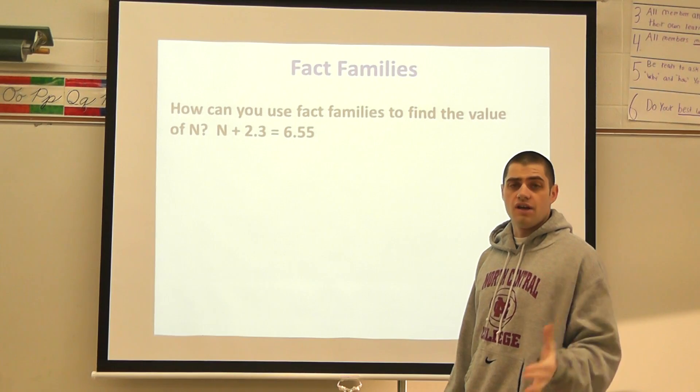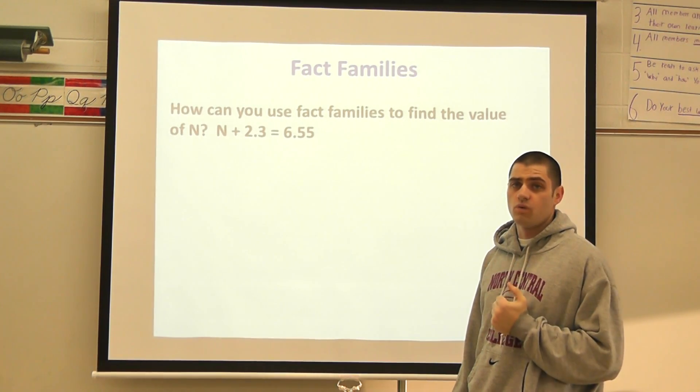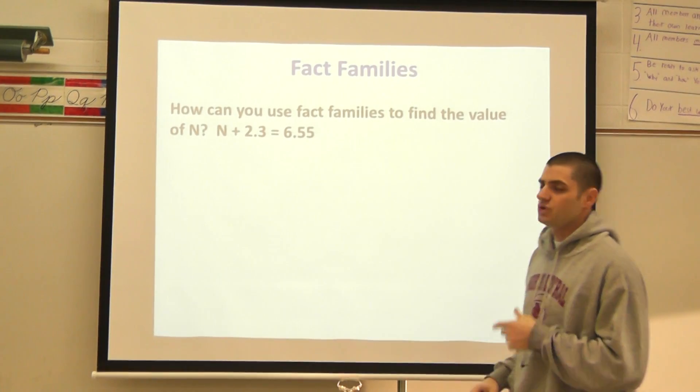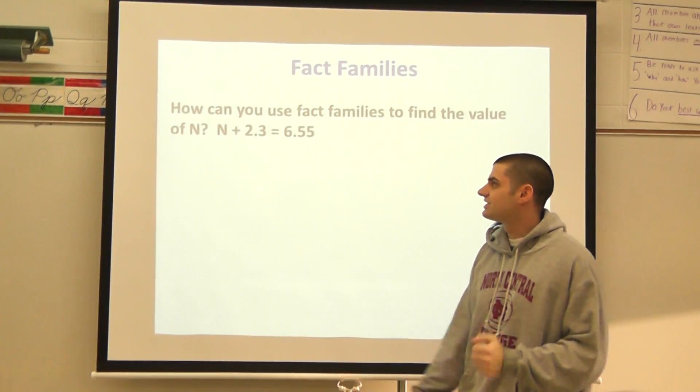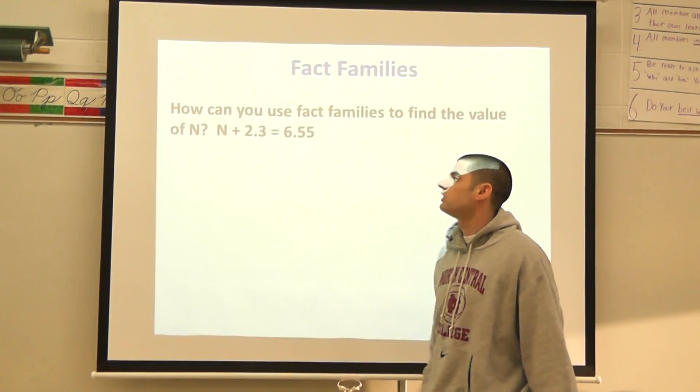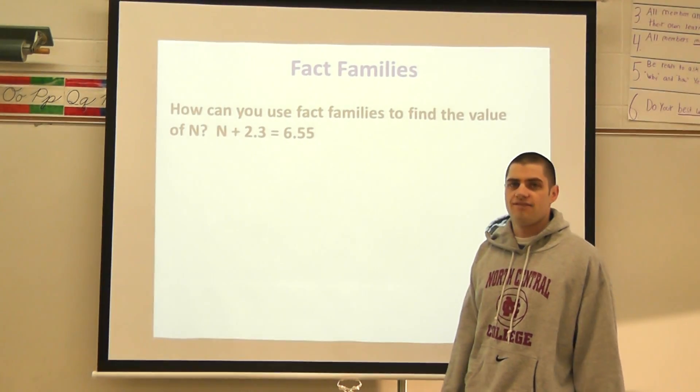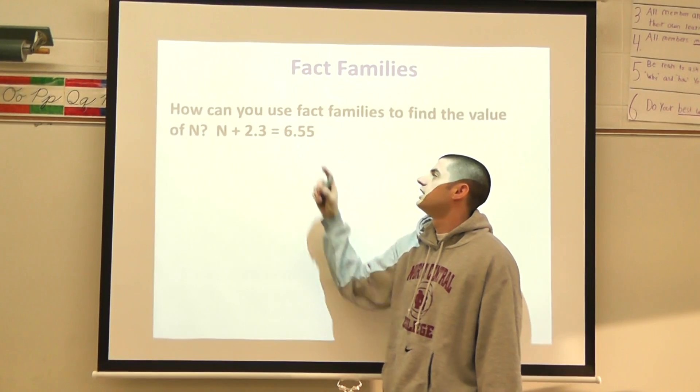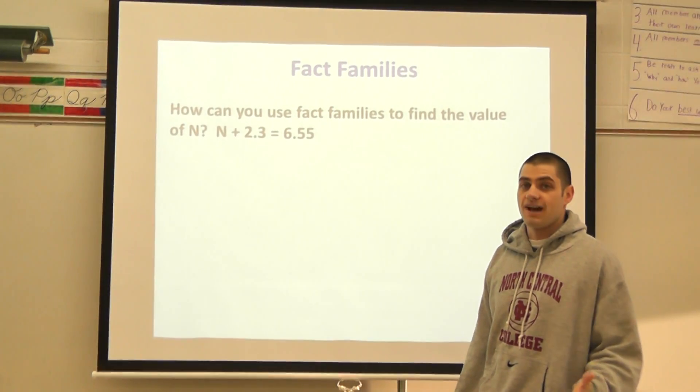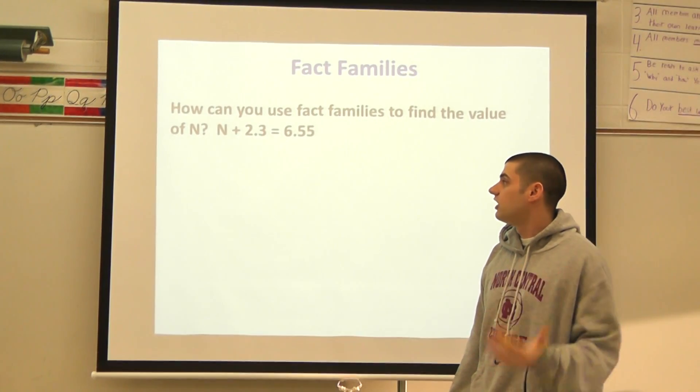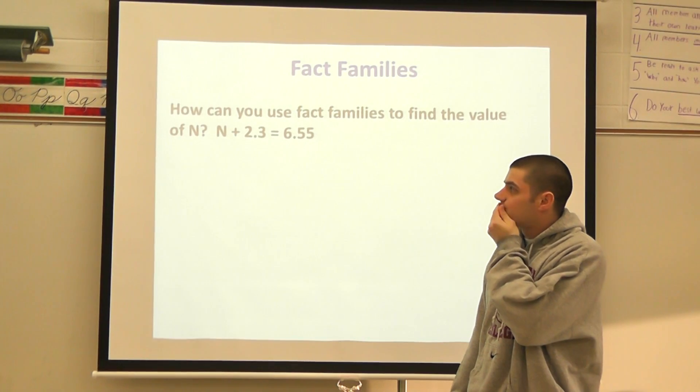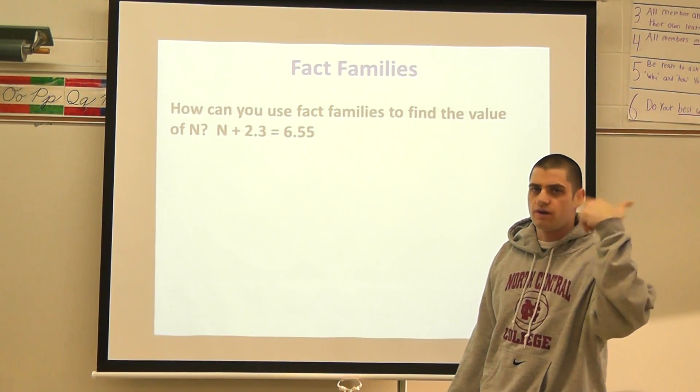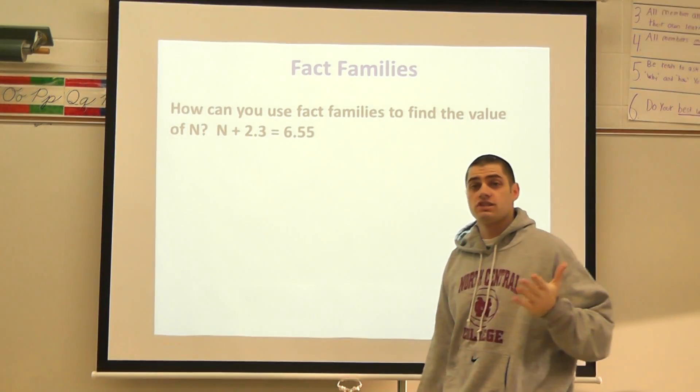Similar to the ones that we solved in investigation 1.1 and 1.2, it says how can you use fact families to find the value of N if my number sentence states N + 2.3 = 6.55. I can ask myself what number plus 2.3 equals 6.55, or 6 and 55 hundredths. Now, what do we know from fact families that we've talked about earlier this year?